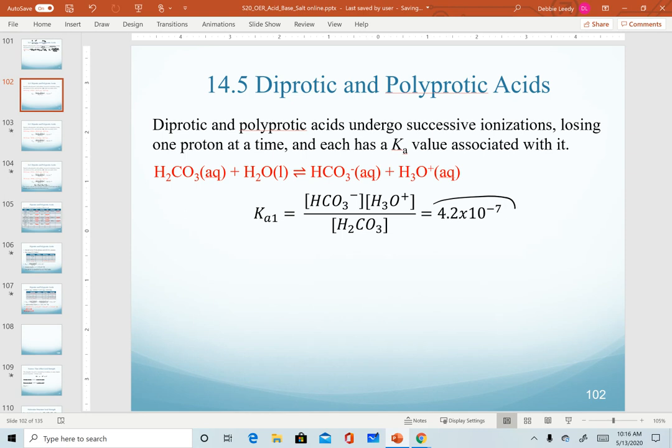And for Ka1 for carbonic acid, it has a value of 4.2 times 10 to the minus 7.